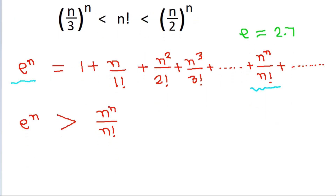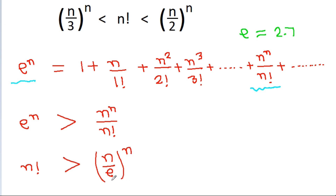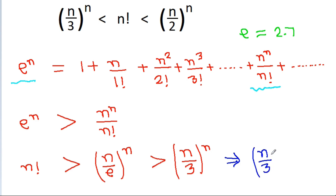From here we can get that n! must be greater than n^n / e^n, which equals (n/e)^n. Now, since e < 3, if we increase the denominator, we can say that (n/e)^n is greater than (n/3)^n. So we get (n/3)^n < n!. We have proved the first part.